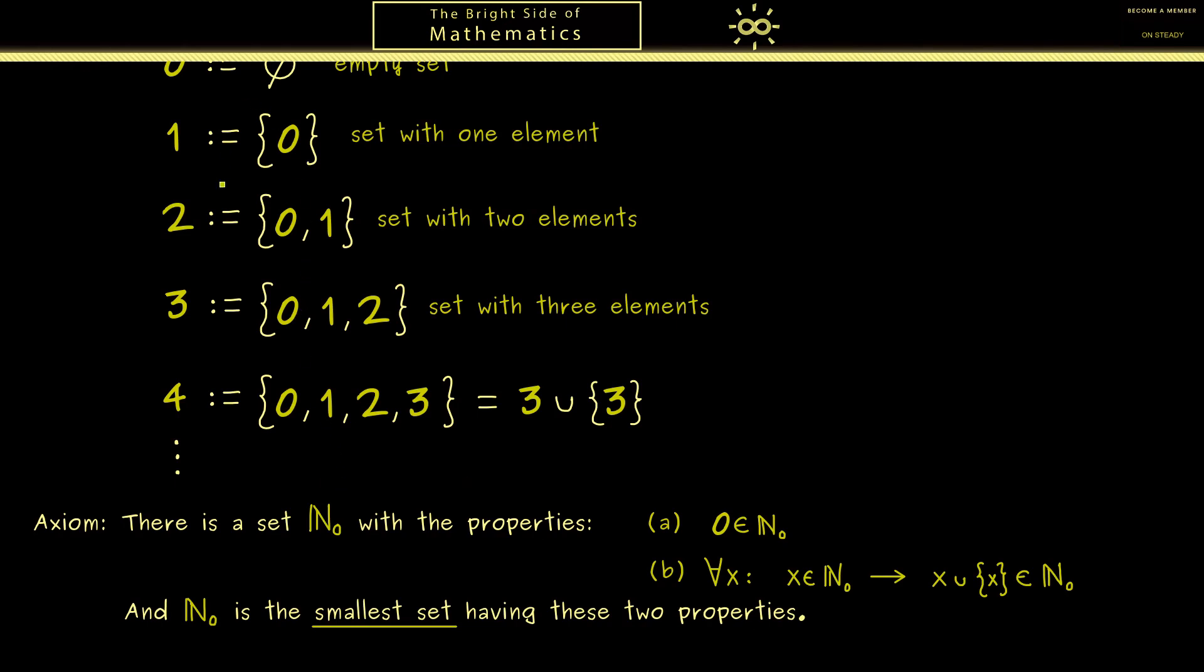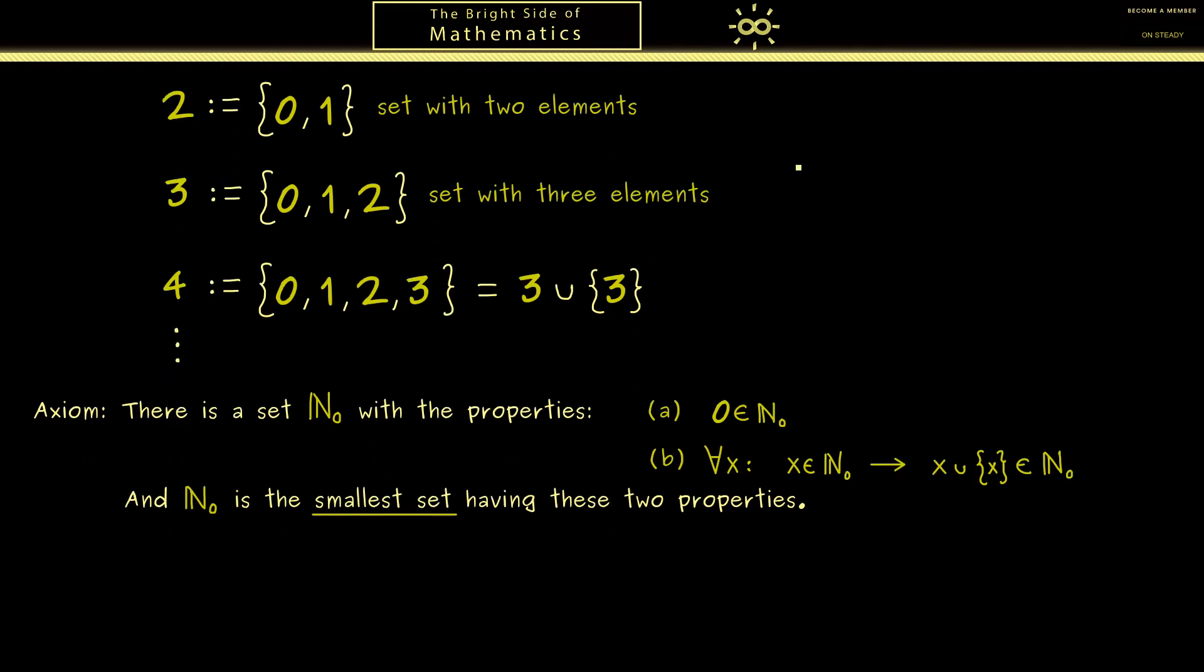It's constructed with sets. It has sets as elements such that we can work with it. That's how you should see it. It's not the explanation of numbers. It's a working tool for us. Therefore it's often called a model for the natural numbers.